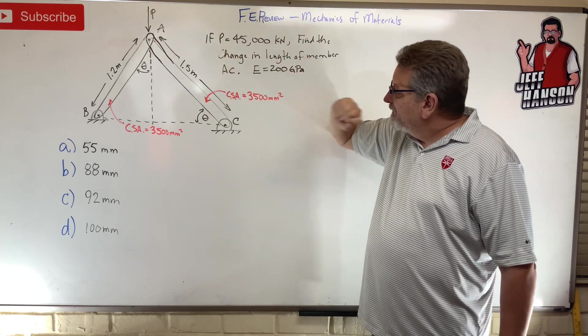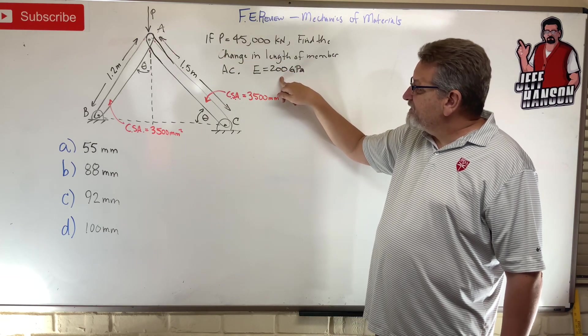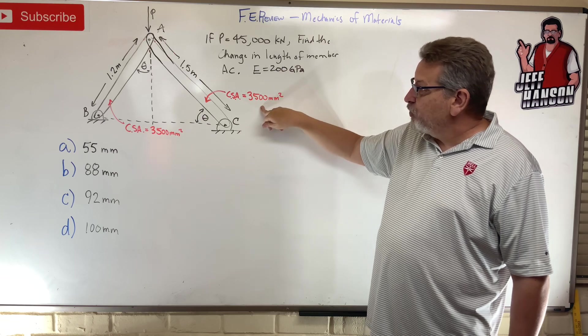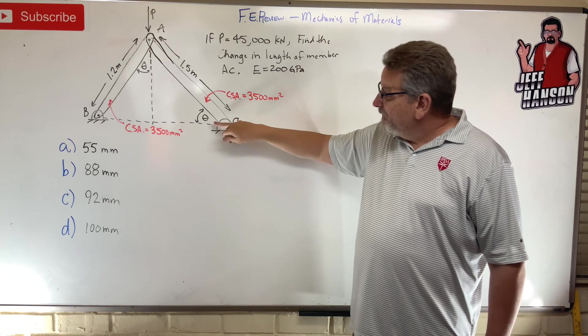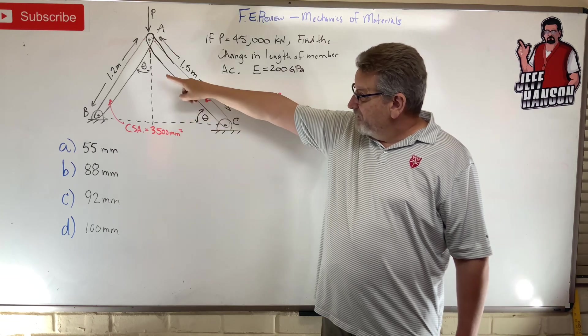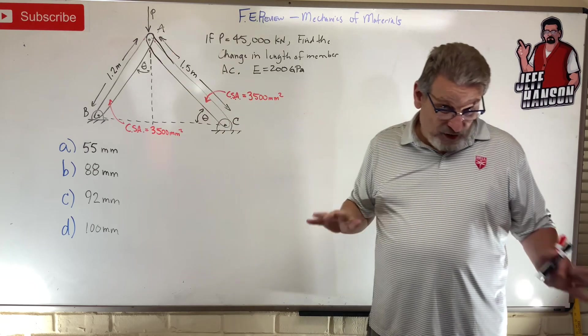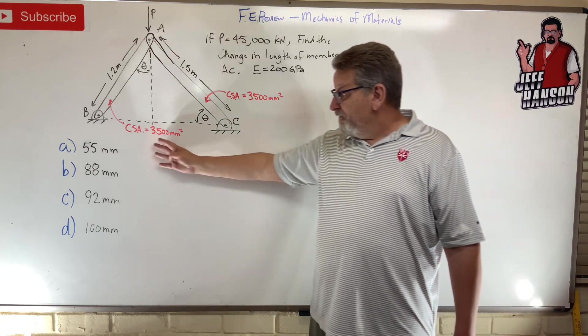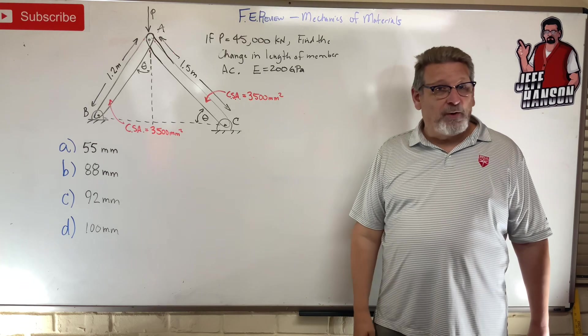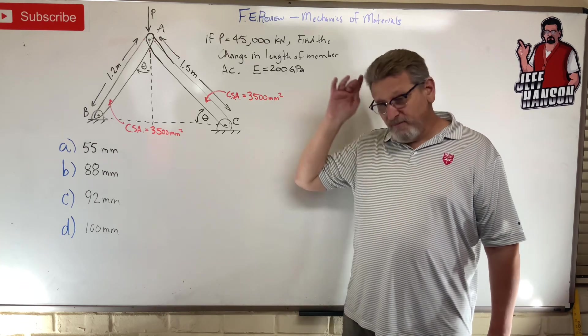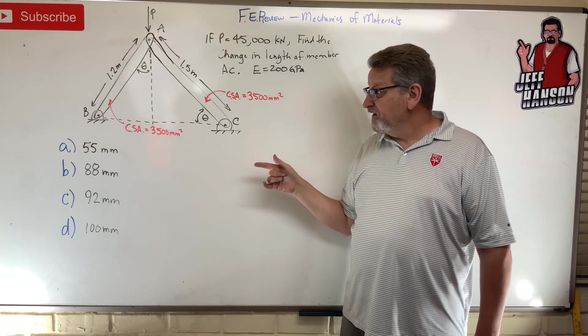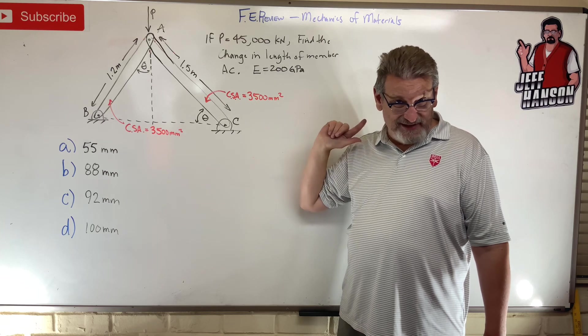This one over here, given that the modulus of elasticity is 200 GPa. I'm giving the cross-section of the pieces. Now the important thing is this angle here is equal to that angle, but that's all I know. There are your answer choices. Press pause, work it out. When you come back, I'm gonna work it for you. Let's see if we get the same answer. Okay, ready, set, go.